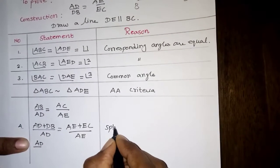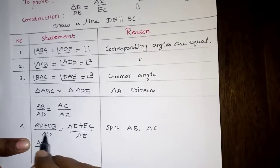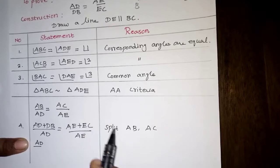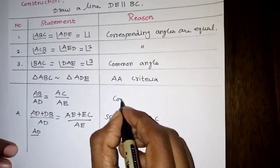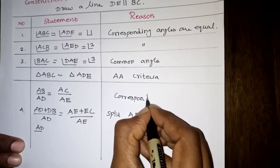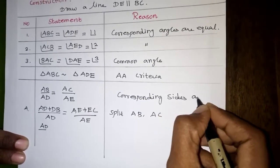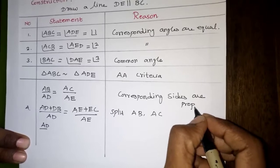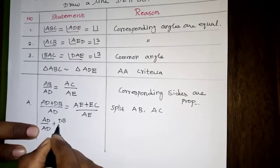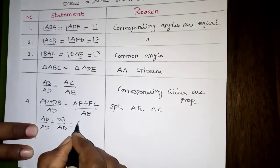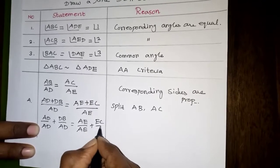The reason is how to split AB and AC. Corresponding sides are proportional. So we write: AD divided by (AD plus DB) equals AE divided by (AE plus EC).